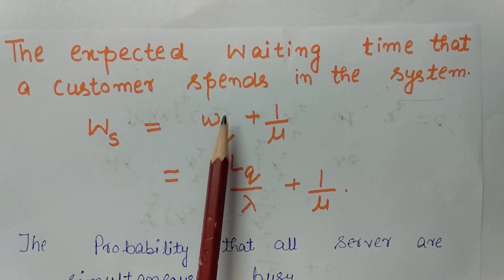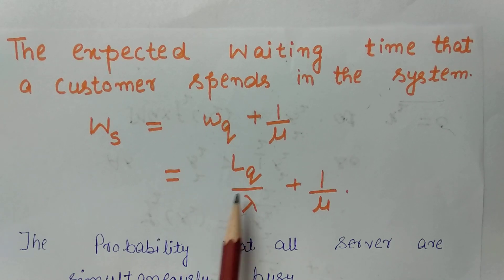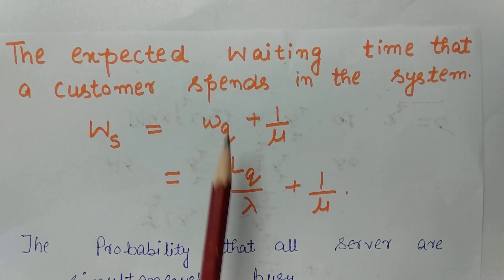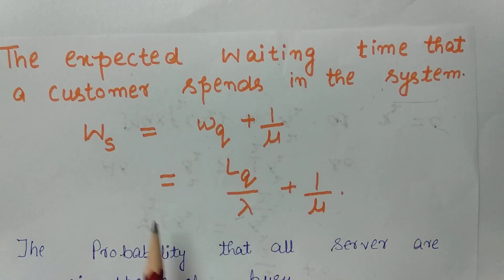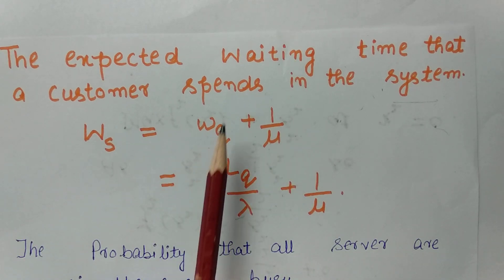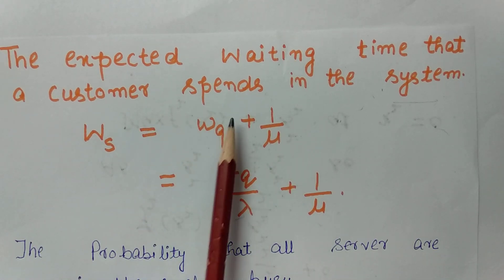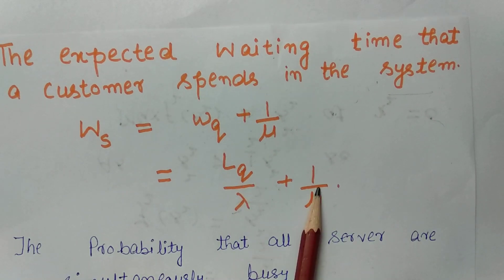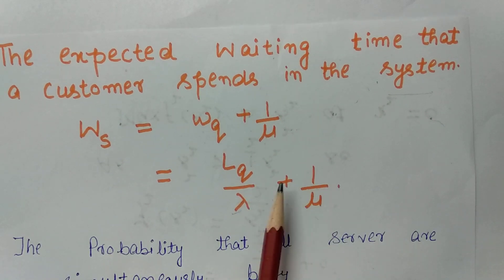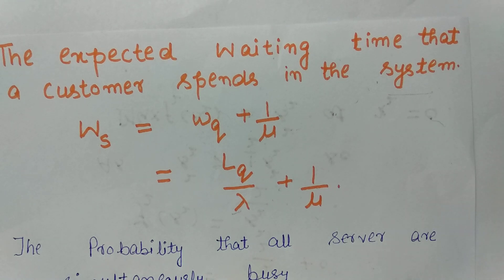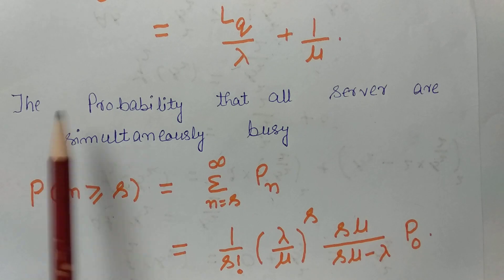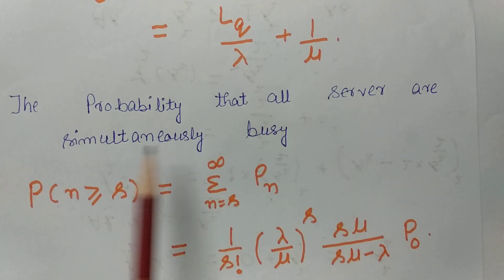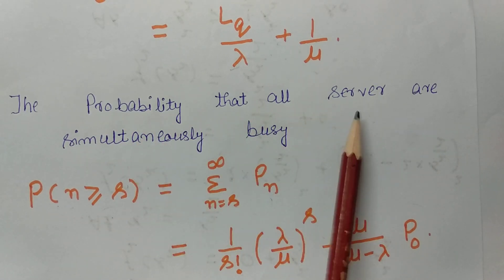To summarize: Wq equals Lq divided by λ, and Ws equals Wq plus 1/μ. You can use either method depending on the availability of the values.